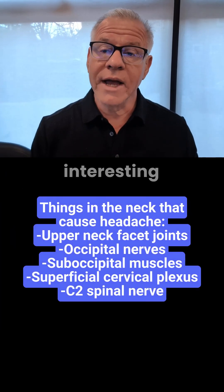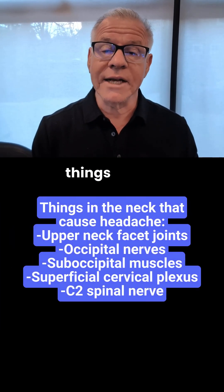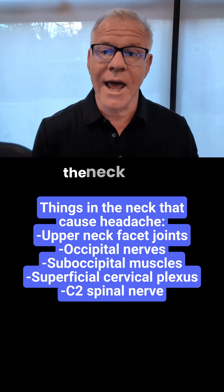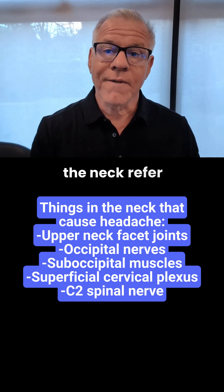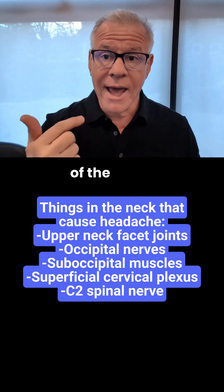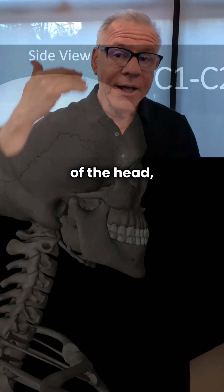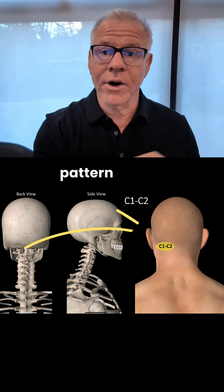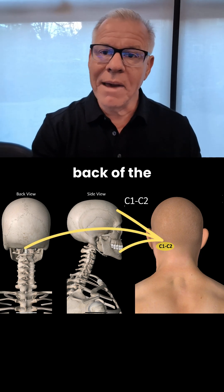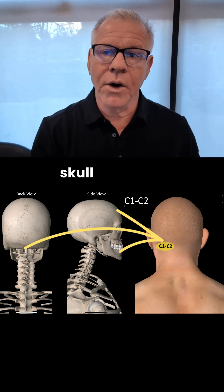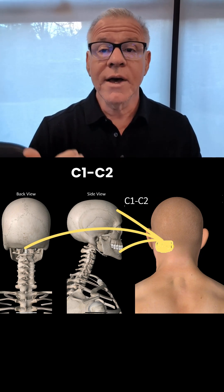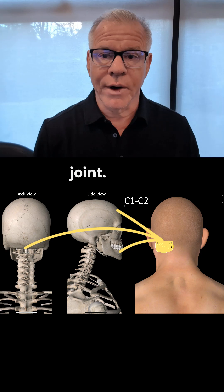Well, one of the more interesting things is that while lots of different structures in the neck refer to different parts of the head, that particular pain pattern across the back of the base of the skull is usually related to the C1-C2 facet joint.